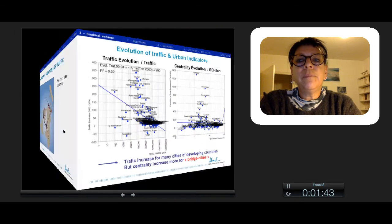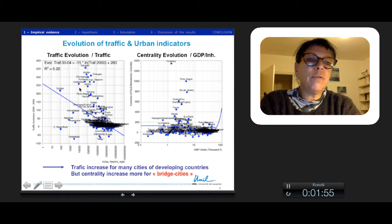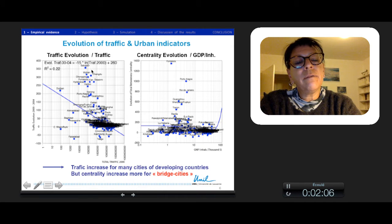We see that the evolution of traffic increased for many cities. This is the traffic evolution from 2000 to 2004 according to the traffic of 2000. Many medium cities increase a lot and they are in developing countries.